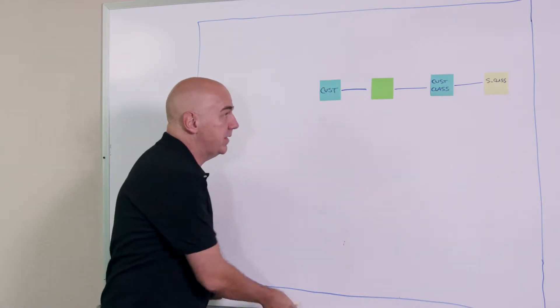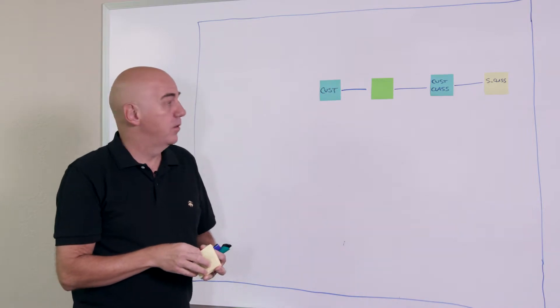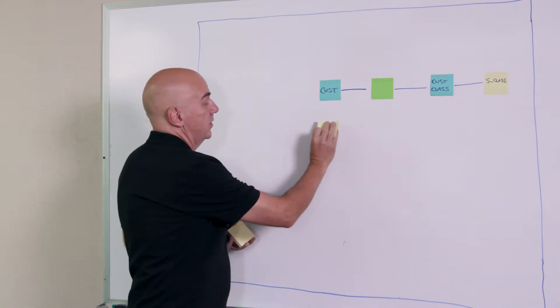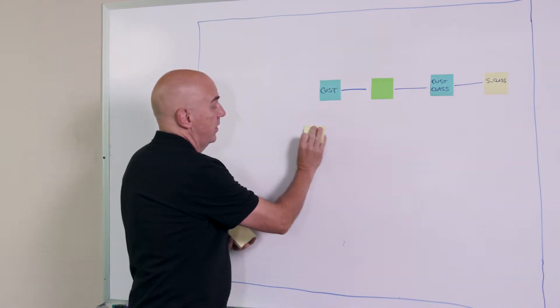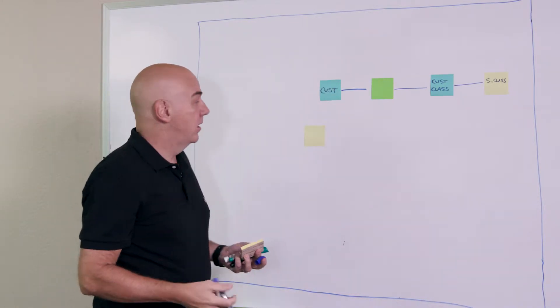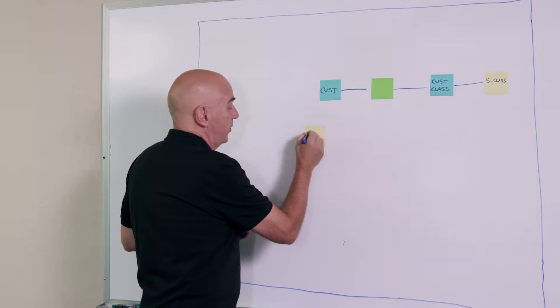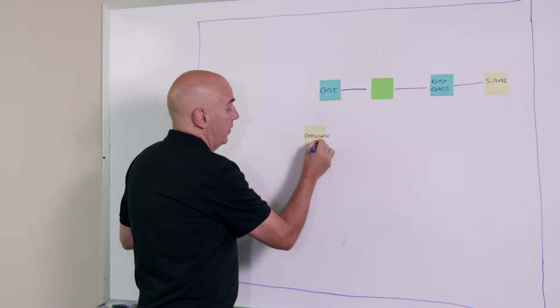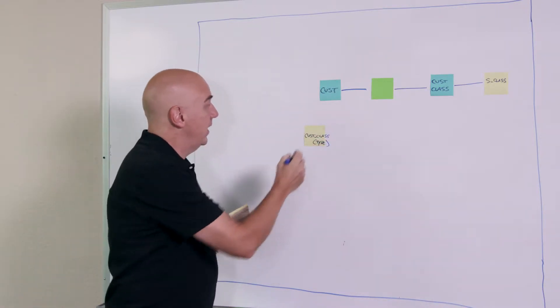If instead I said, well, let me take a satellite, put it directly on customer, let's put it here, and on the satellite, I'm just going to put the actual customer type or class. So let's say customer class type, whatever it is we're using here. Okay, and I attach it directly.